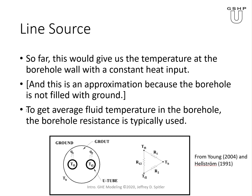Then we use a steady-state borehole resistance to get the temperature of the fluid. If you see here the temperature of fluid 1 and temperature of fluid 2, using the borehole resistance we can estimate the mean value of the fluid temperature. This is one network that's used — any network like this is also an approximation, but you see the borehole wall, a resistance between fluid 1 and fluid 2, and there's also some resistance indicating a possibility for short-circuiting.